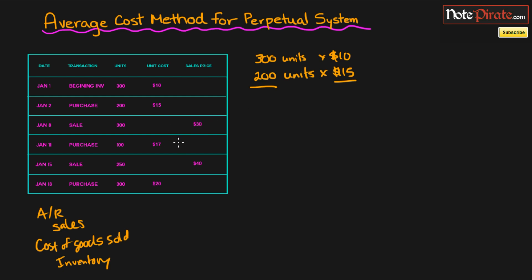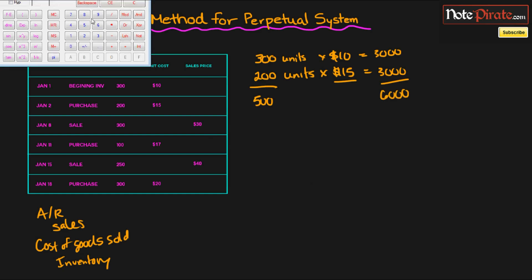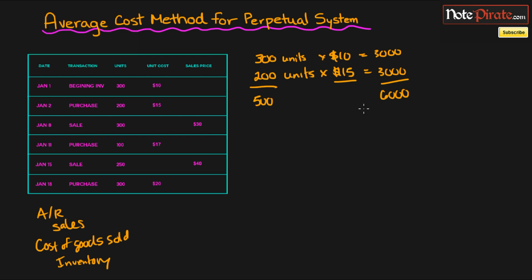So that's why whenever we purchase new goods, we're going to have to create a new average cost. So our average cost right now, we have 500 units, and the cost of each of these inventory amounts will be $3,000, which means that we have $6,000 worth of inventory.